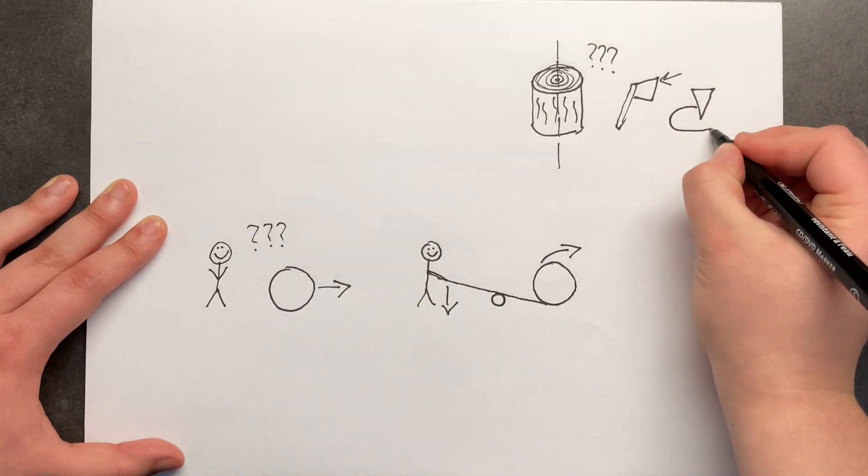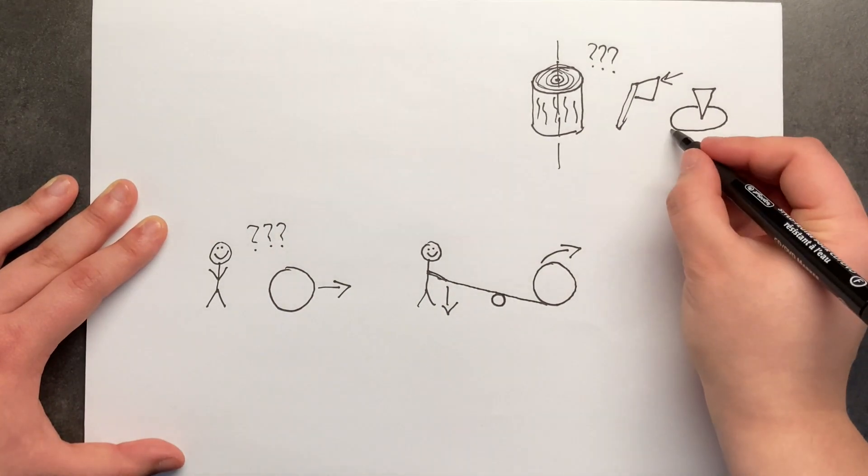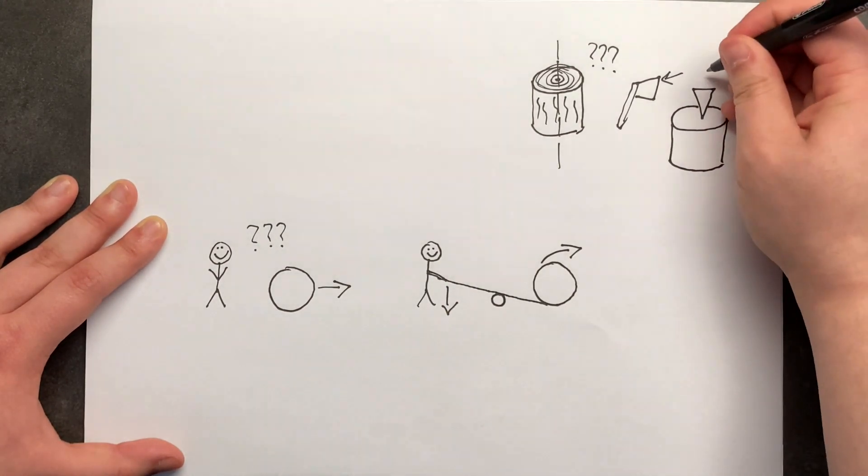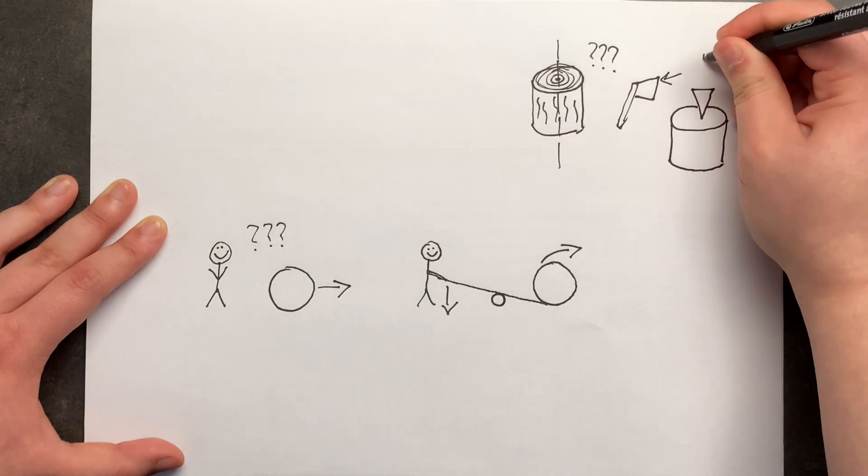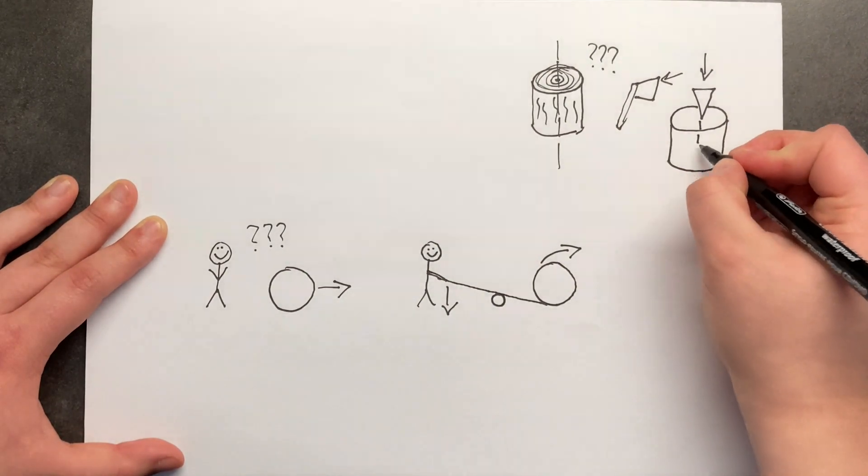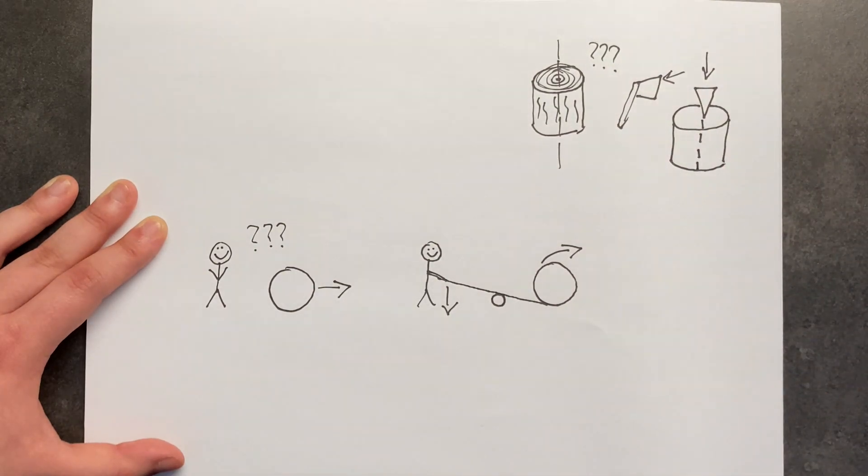So as you whack the wedge downwards towards the object that you want to break, as force comes downwards then the wedge will pry the two sides apart.